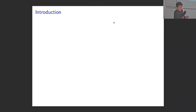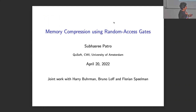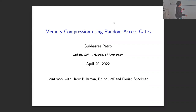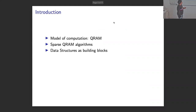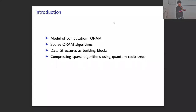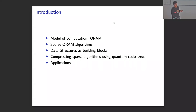I'm going to explain everything about memory compression using random access gates. Before I explain anything, I will first describe the computational model on which we will be looking to compress things. After that, I'll be talking about what sparse algorithms are in the computational model. Then I will be discussing some data structures. For people who are not familiar with quantum things, don't worry — we have a lot of classical things going on. Then we will combine everything to make this compression technique using these data structures, and in the end, we will discuss some applications.